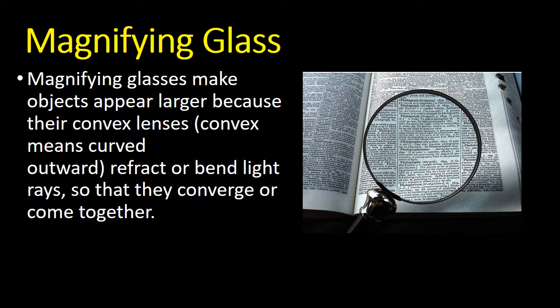And of course, we have the magnifying glass. Magnifying glasses make objects appear larger because their convex lenses, convex means curved outward, refract or bend light rays so that they converge or come together.